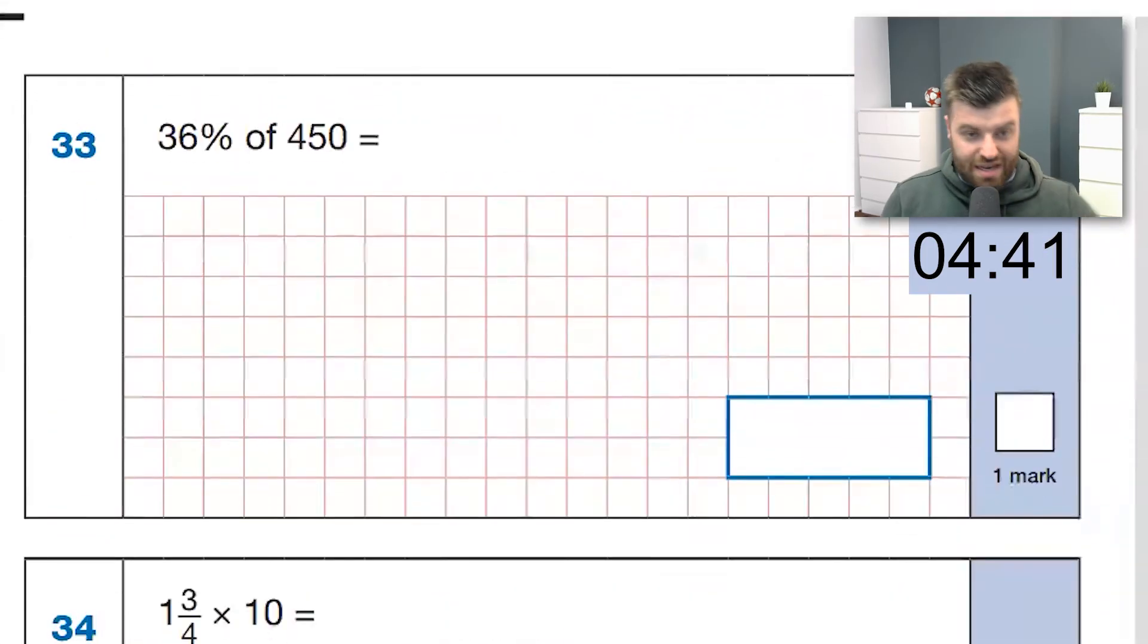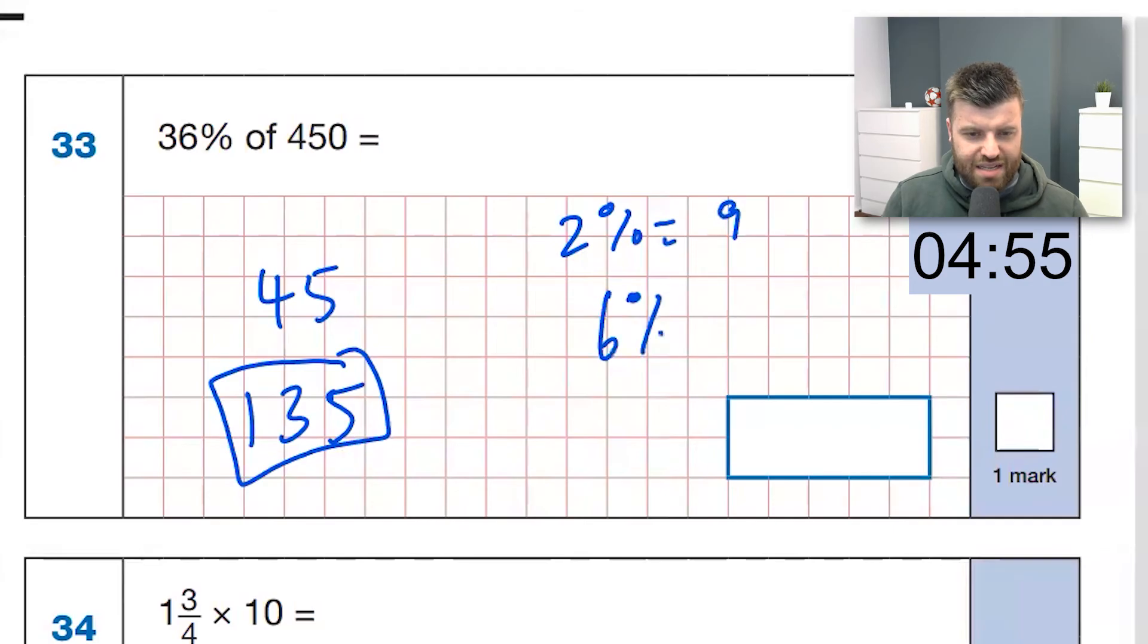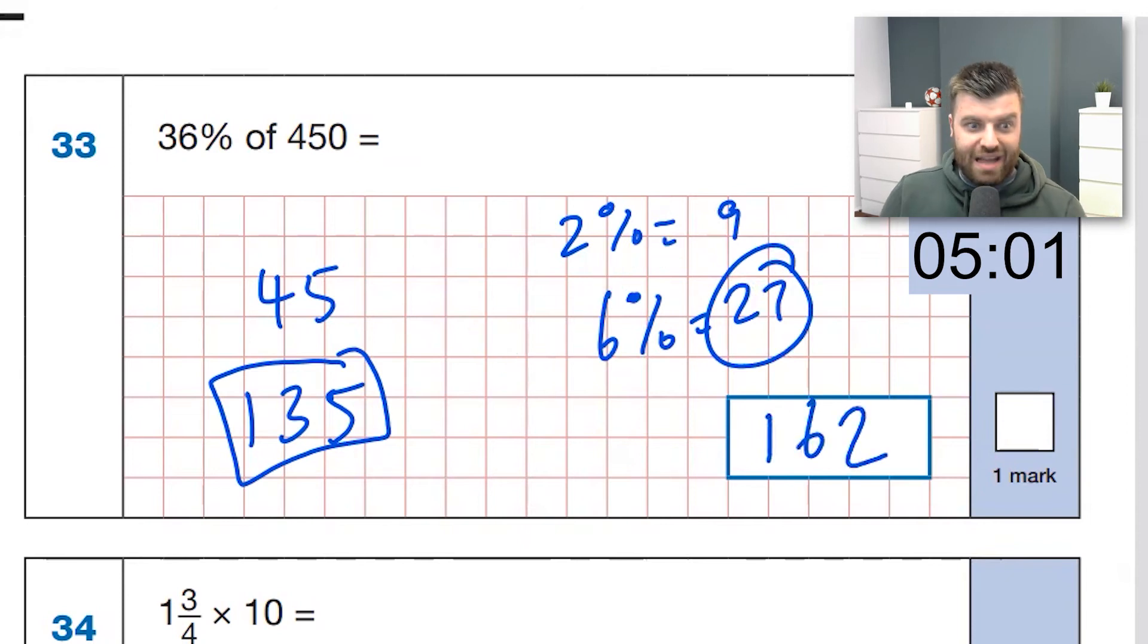Next one. Question 33. Thirty-six percent of four hundred and fifty. Okay, so thirty percent is going to be forty-five. That's ten percent times three. So it's going to be one hundred and thirty-five there. That's thirty percent. How do we work out six percent? Well, one percent is four-point-five. So two percent is equal to nine. So six percent is three lots of that, which is twenty-seven. So we've got six percent and thirty percent. Add them together, we get one hundred and sixty-two as our answer.